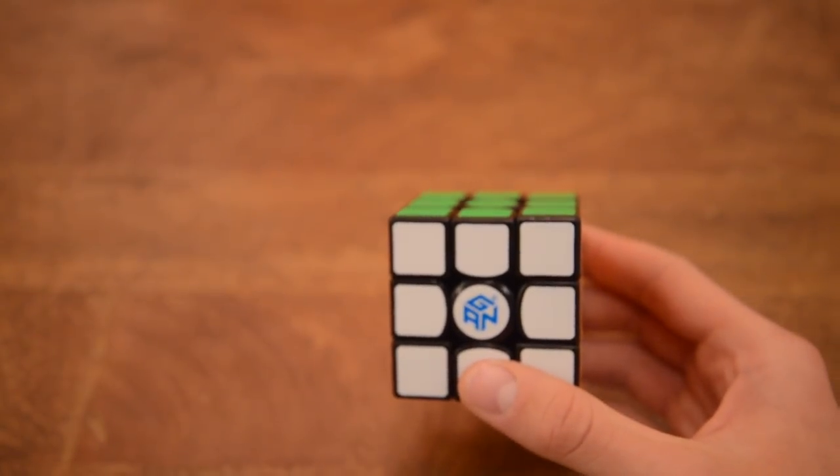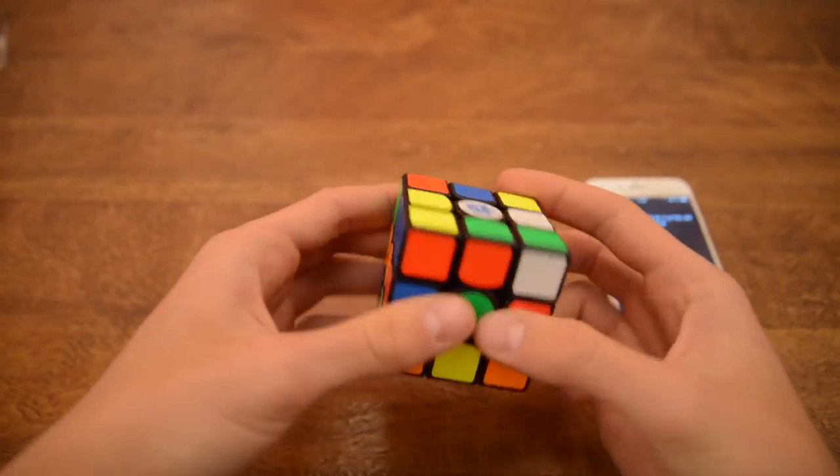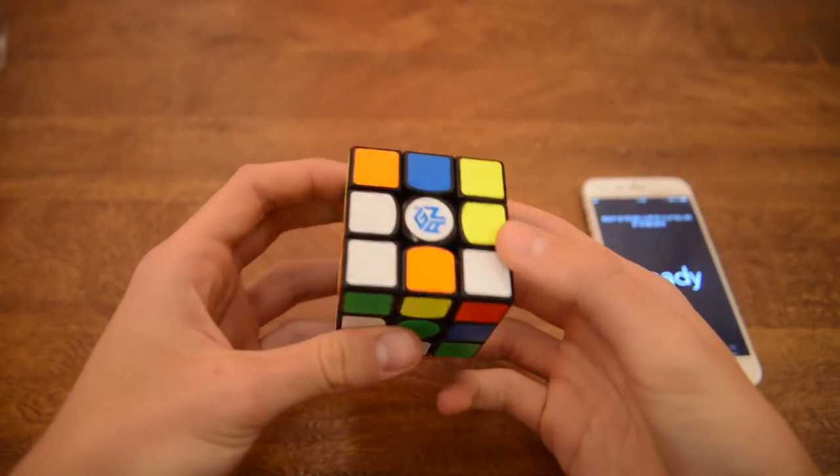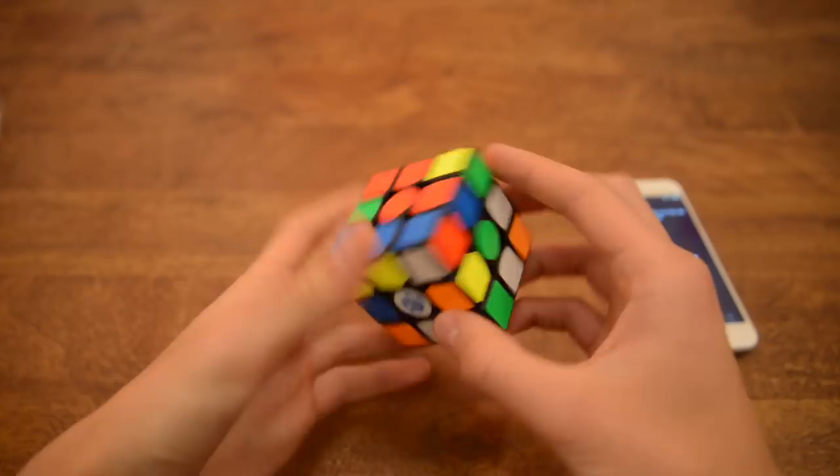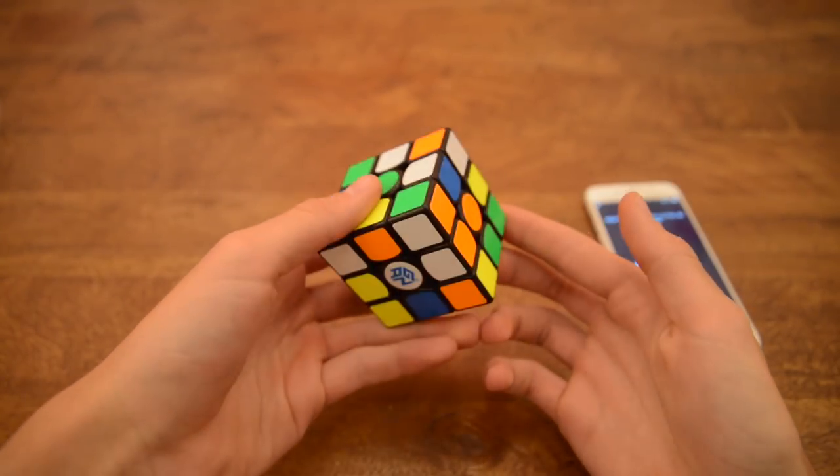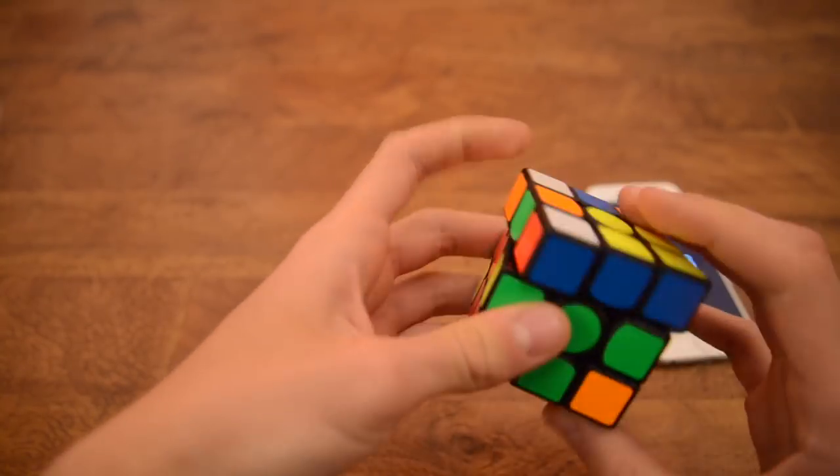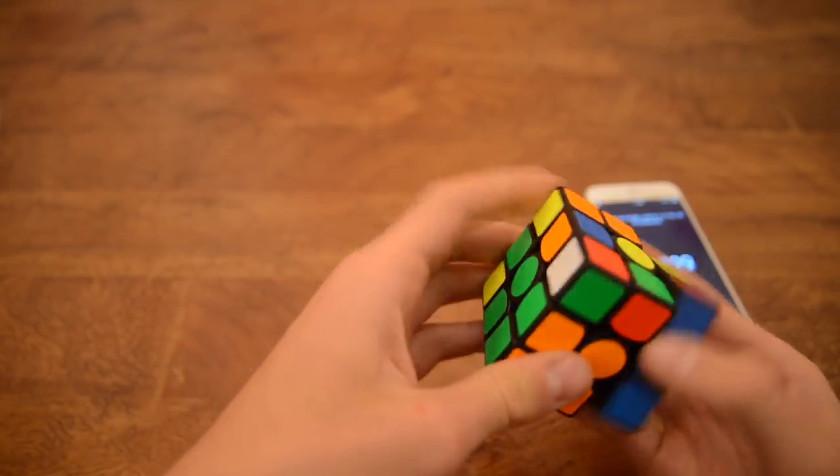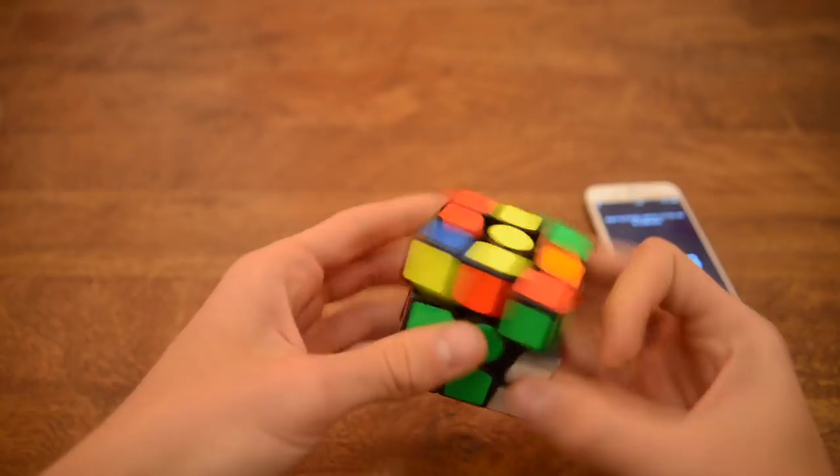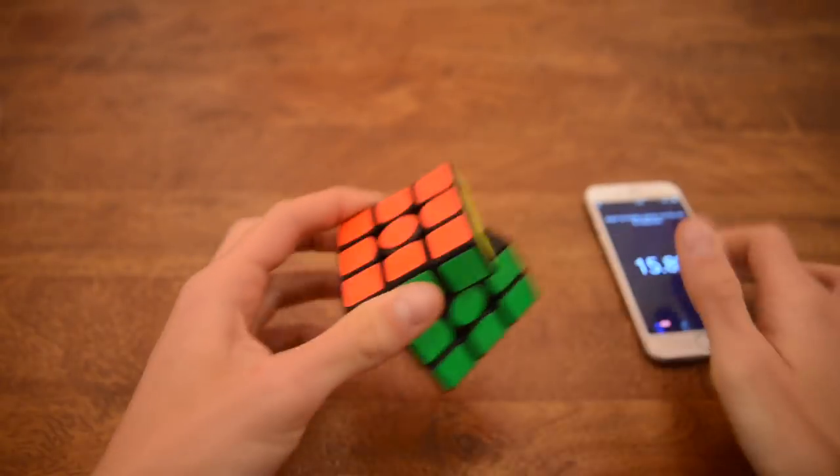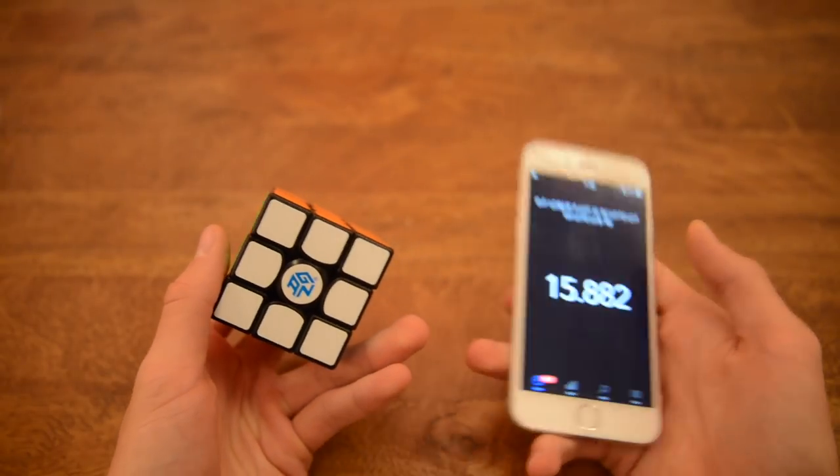Okay, so I will get my phone and I will do my first ever solve. But the camera is going to be in my way, so it's going to be kind of stupid. So let's just do it. Let's see what time will I get. Okay. Let's put it like this. Okay. So let's see. Had to do the W perm because I kind of suck. But sub-16. A good solve.